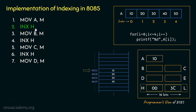The next statement is INX H. The mnemonic INX means increment the register pair, and we are talking about the HL register pair. If we increment the value 003C, the content inside the HL pair will become 003D. Since HL now holds 003D, the microprocessor will point to the next address, 003D, in memory, which contains the data 20. The next instruction, MOV B, M, will move the content of that memory location into general purpose register B — so 20 will now be moved into B.